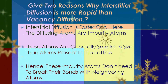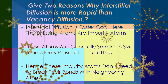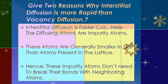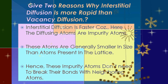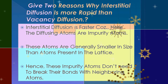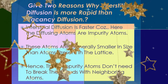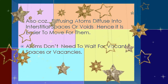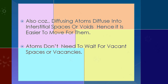The second reason is that diffusing atoms diffuse into interstitial spaces or voids, hence it is easier for them to move. Since they are smaller impurity atoms moving through available void spaces, the process is much faster than vacancy diffusion. This is a very important question — if you haven't seen the previous videos, you can find them in the video description to better understand these answers.